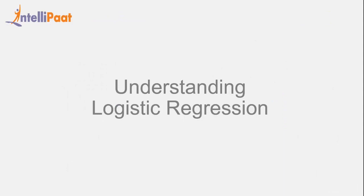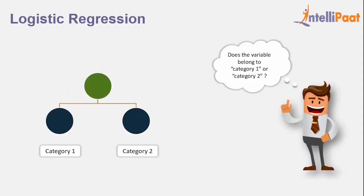In simple terms, regression helps you understand the extent of the relationship between two variables. Logistic regression is a regression technique where the dependent variable is categorical — that is, we determine the probability of an observation belonging to a particular category.